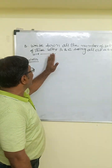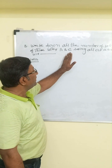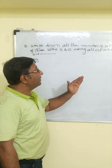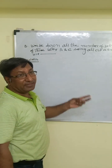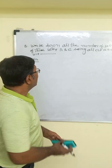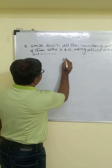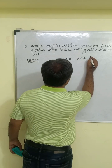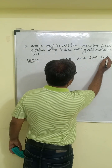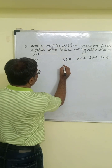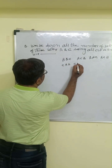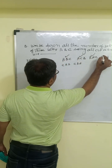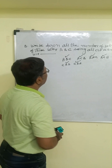Next question: write down all permutations of the set of three letters a, b, c, taking all at a time. We can make: abc, acb, bac, bca, cab, and cba. Total number of arrangements is six.